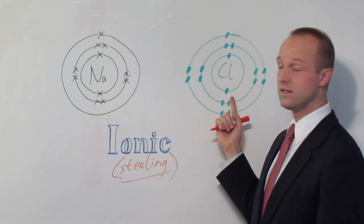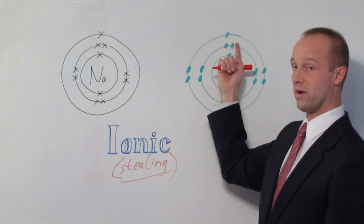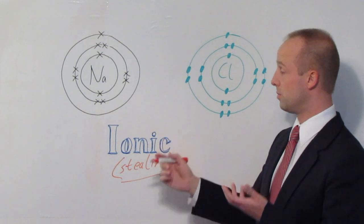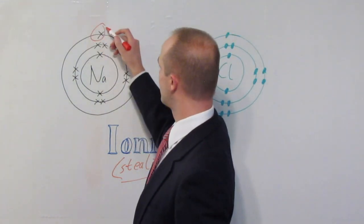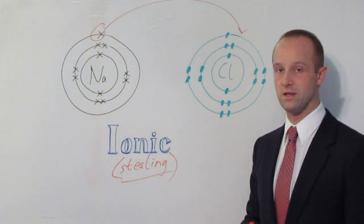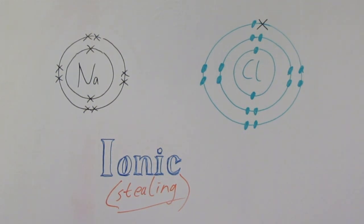The chlorine over here on the other hand has just got one gap in its outer shell. It just needs one electron, so there's a fairly clear way that they can solve their problems. The sodium gets rid of its electron and it goes over there to the chlorine. If we add to our diagram to show what's happened, you can see that the sodium has lost one of its electrons represented by that X and that's moved over to where the chlorine is. So the chlorine now has a complete outer shell and the sodium has a complete outer shell.